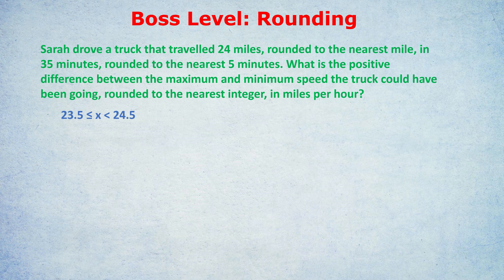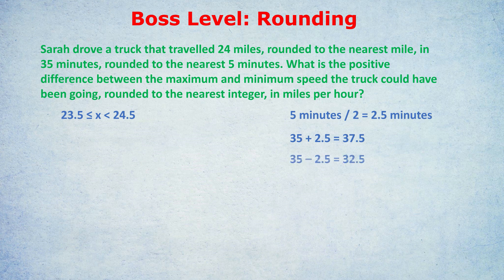Now you get one last chance to prove yourself on rounding. It said she took 35 minutes rounded to the nearest five minutes. Pause and find the upper and lower bound. It said rounded to the nearest five minutes, so we take five and divide by two — that gives us 2.5 minutes. Add to 35 and we get 37.5 minutes. Take away from 35 and we get 32.5 minutes. Those are the upper and lower bounds.